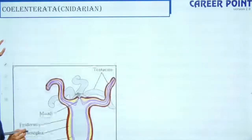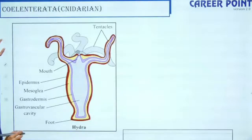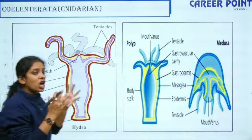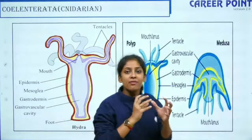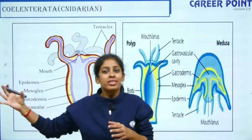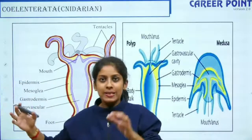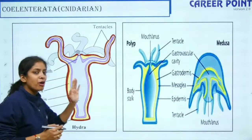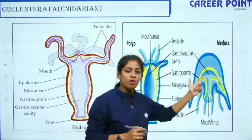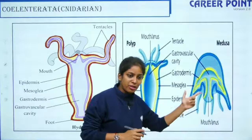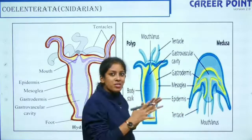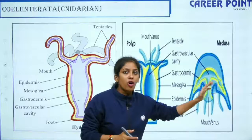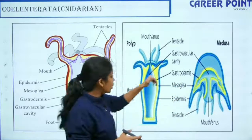The next phylum is Coelenterata, also known as Cnidarians. They are called Cnidarians because they have cnidoblasts in their tentacles — the stinging cells. They can be of two forms: the polyp form, which is sessile and fixed to the ground, and the medusa form, which is free-moving.